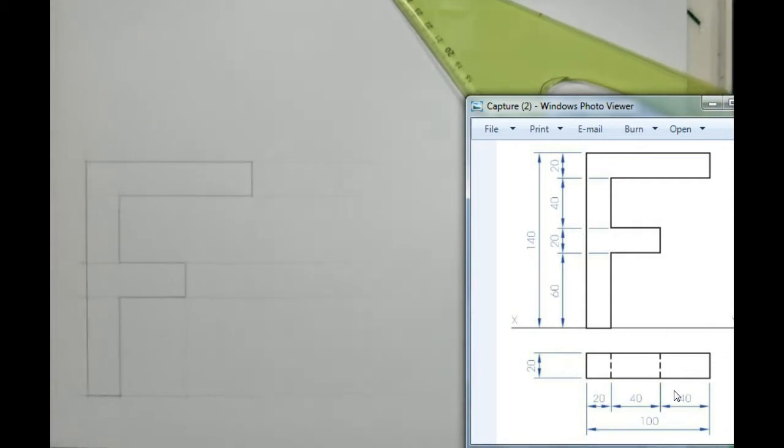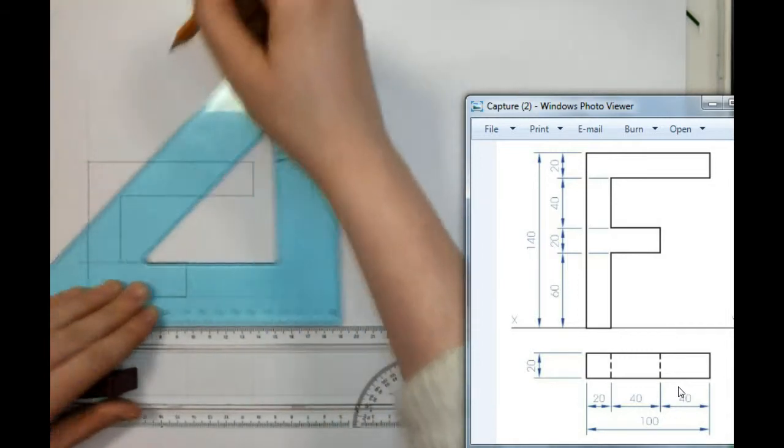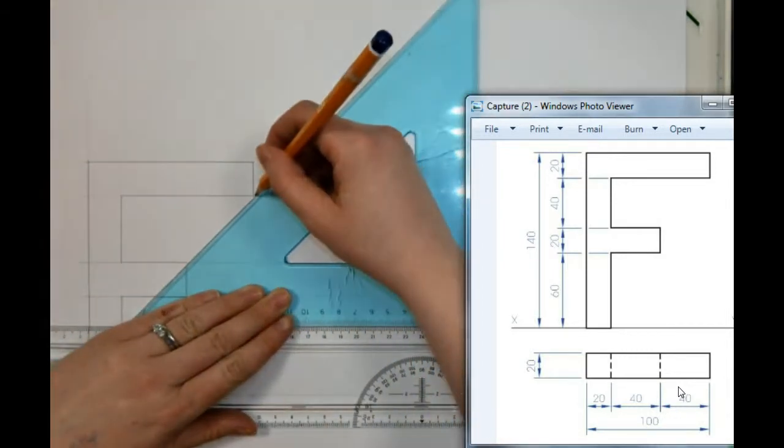Now, the next thing I need to do is make it 3D. In order to make it 3D, I'm going to use my 45 degree set square to draw 45 degree construction lines from each point.